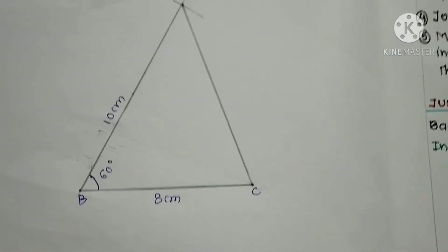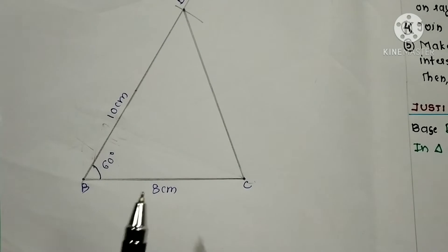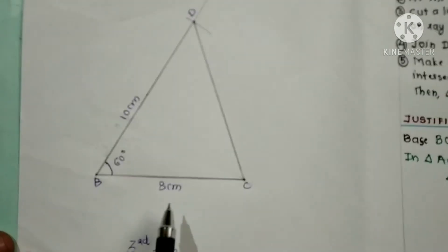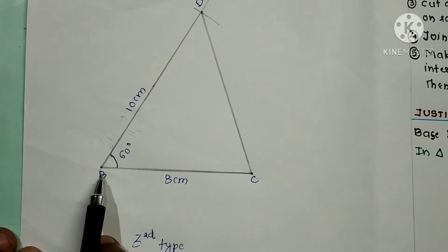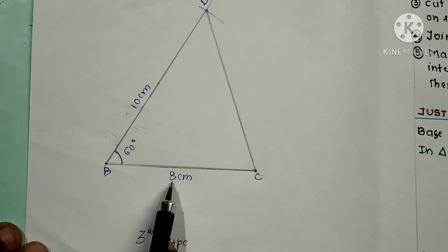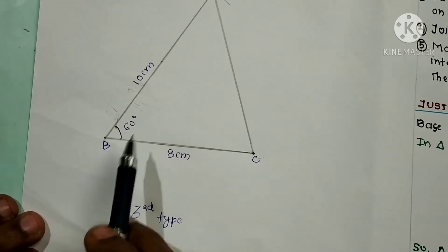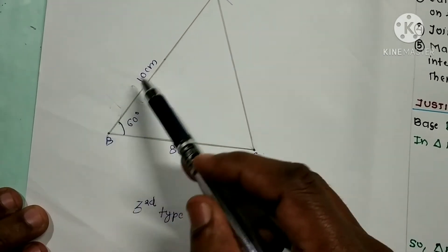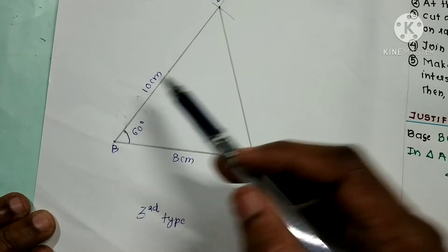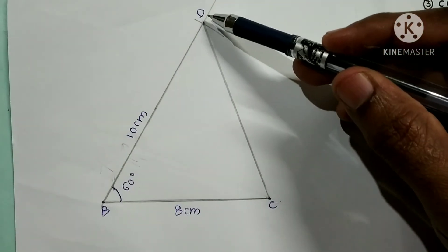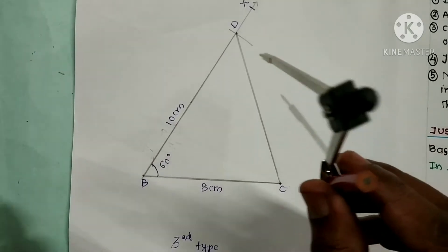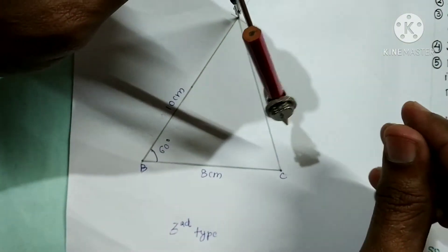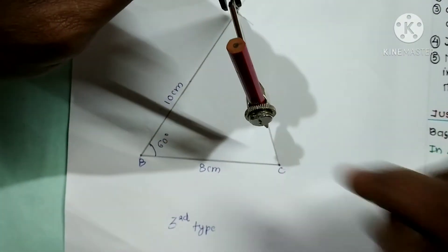Now let us move to the third type. For the third type also we follow the same first four steps as for the first and second type: step one, line segment BC equal to 8 cm; step two, angle 60 degrees; step three, 10 cm distance; step four, join DC. For this next step we have to draw one perpendicular bisector from D and C.